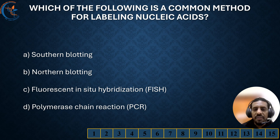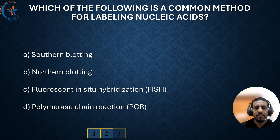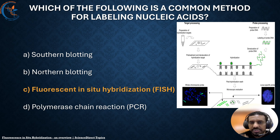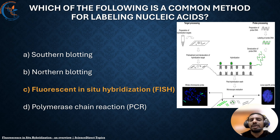Which of the following is the common method for labeling nucleic acids? The correct answer is the FISH technique. FISH is used to label specific DNA or RNA sequences within cells using fluorescent probes. These probes have fluorescent tags attached to them and are designed to bind to specific sequences within the DNA or RNA of the cells. When the probes attach to their target sequences, they emit fluorescent signals that can be seen under the fluorescent microscope, allowing researchers to identify and visualize the location and amount of the specific sequence in the cells.